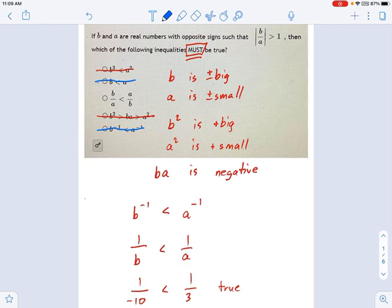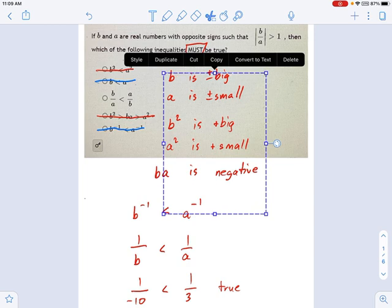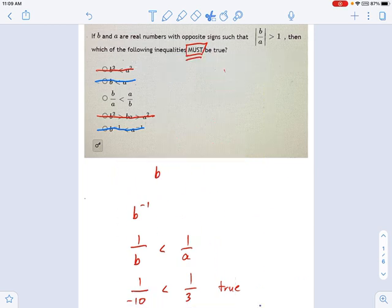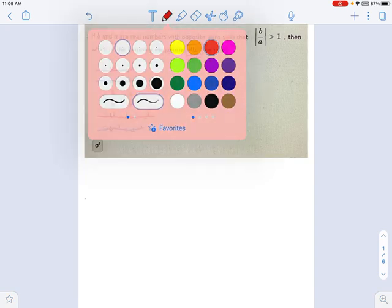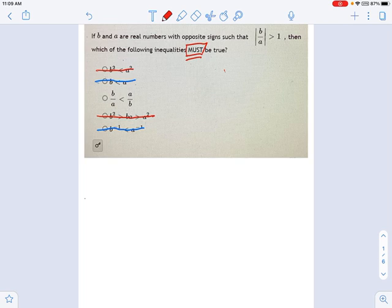The only one that must be true by process of elimination is b over a less than a over b. Let me show, for example, why that is actually a definite. And let's just wipe some of these out. Why must that thing be true? And maybe if you had found this one while you were working through them, you would say, yes, this is definitely true. I don't need to check the others. That could save you some time.